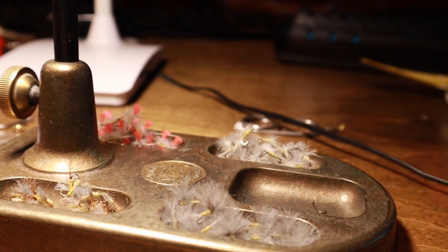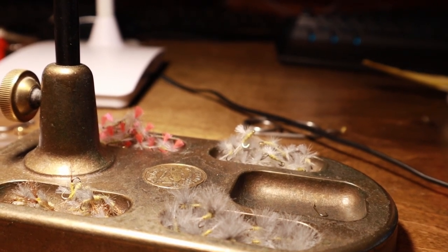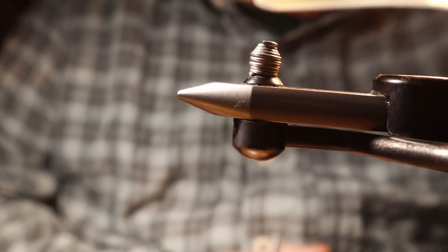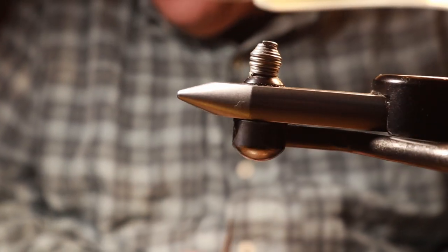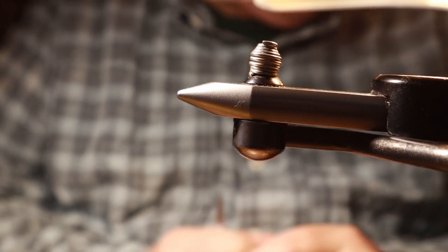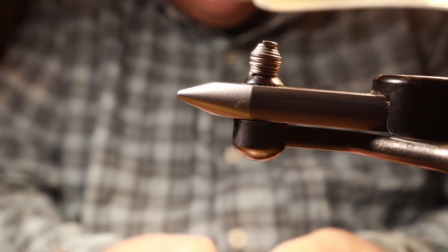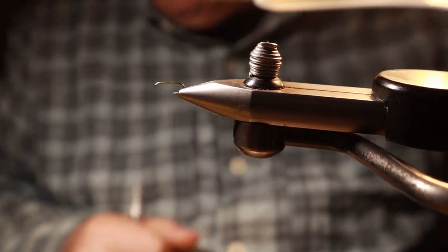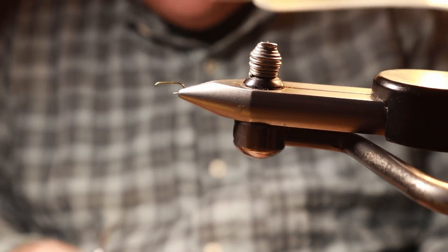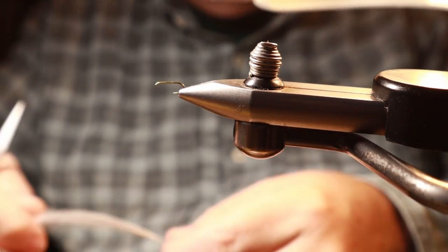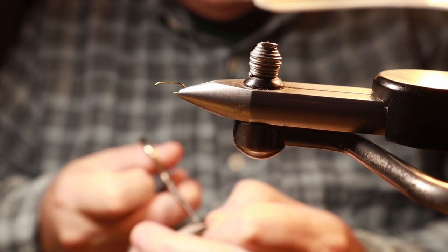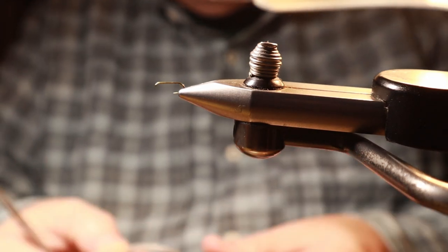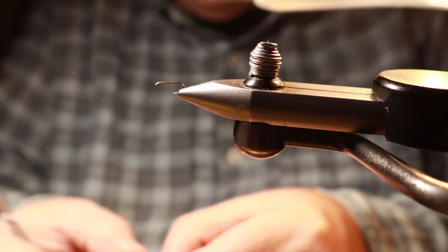We're going to be tying a PMD comparidun today in a size 18 TMCO 100, so we're going to get that in the vise. This is a fly that I feel like when the fish get really selective, if they don't eat this fly you probably are not getting a good drift or they are not eating on top. If they're eating on top and you get a good drift, they're usually going to take this fly.